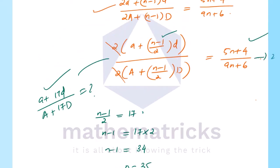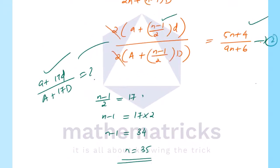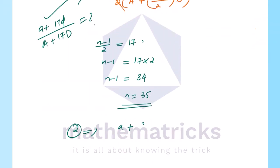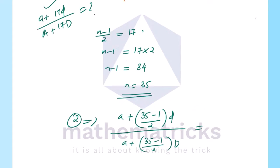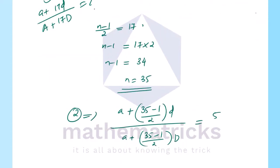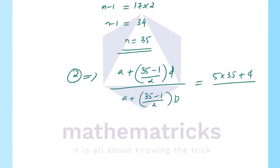Substituting n equals 35 into the ratio: a plus (35 minus 1 by 2) into d divided by A plus (35 minus 1 by 2) into D equals 5 into 35 plus 4 divided by 9 into 35 plus 6.